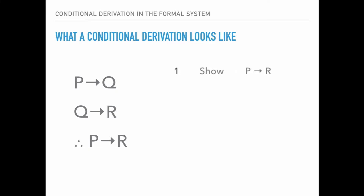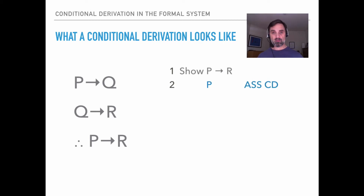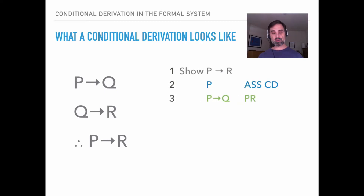So the first thing we do is say 'show if P then R,' and then we do something new. Instead of putting it in our premises, we make an assumption. We say P — that's the antecedent of the conditional we're trying to show — and the justification is AssumeCD, which stands for 'assume for conditional derivation.' Having made this assumption, we bring in our premises: if P then Q (first premise) and if Q then R (second premise).